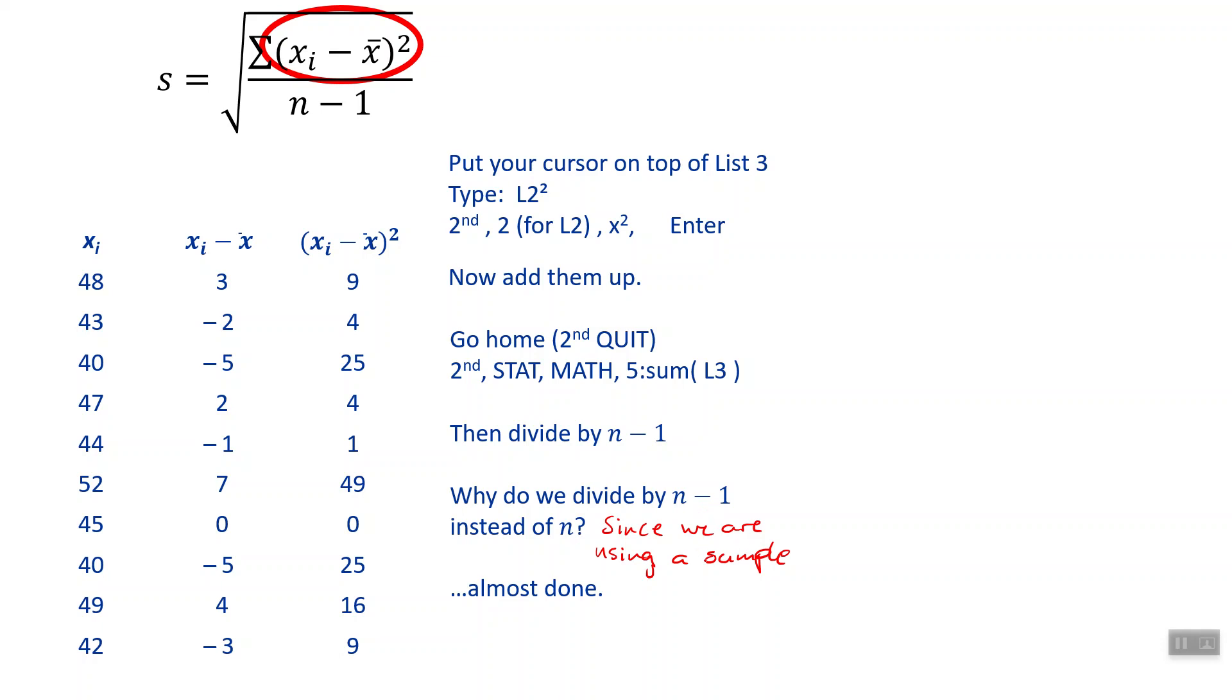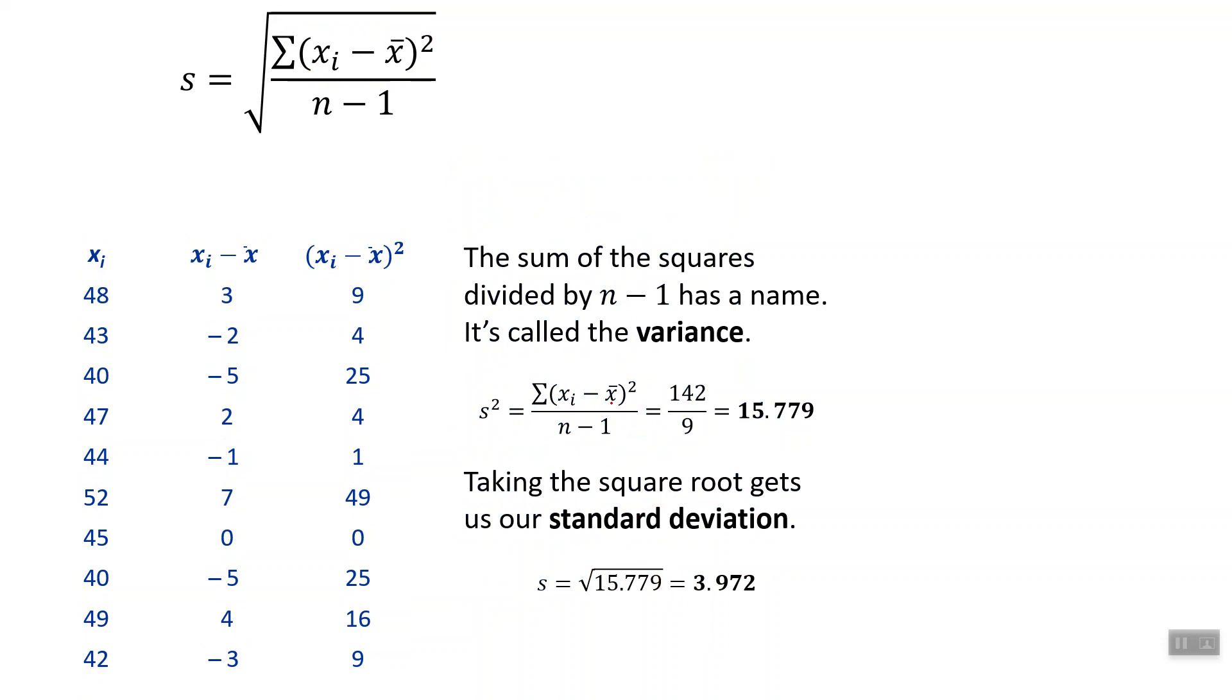Before we take the square root, this is called the variance. We don't have a special symbol for variance, we just use S squared. Standard deviation squared is the variance. Then we take our square root and we get our standard deviation, 3.927. In AP Calc we don't need three decimal places. If we said 3.9 or 4.0 or 3.97, all would be fine. That is the average amount that each of these values differs from the mean, which is 45.